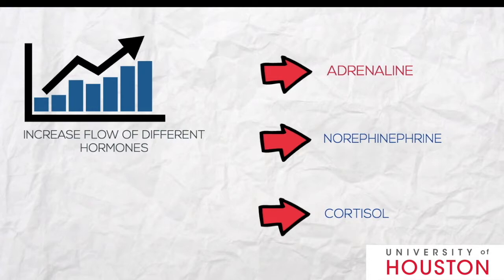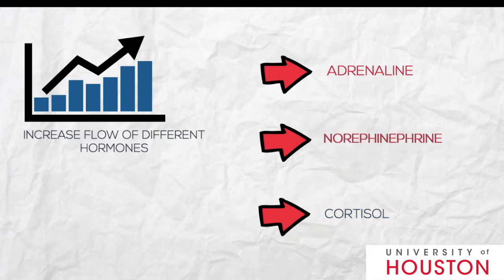Adrenaline is secreted from the adrenal gland and is commonly known as the fight-or-flight hormone. It helps us make quick responses during stress. Norepinephrine is also secreted from the adrenal gland and works in the same way as adrenaline.